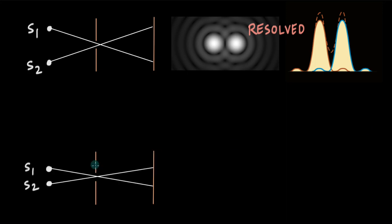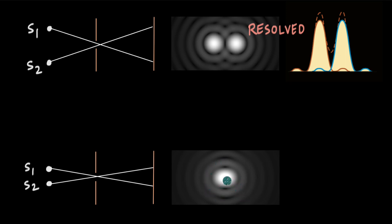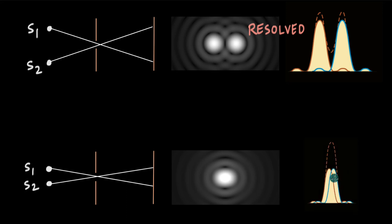But if the objects are very close to each other, the diffraction patterns will also start coming close to each other. The two central maxima overlap, and instead of two sources we will see only one source — only one peak in the intensity graph. It appears to us that there aren't two objects, there's only one. In this case we say the image is not resolved — it's unresolved — because we cannot distinguish or identify two separate objects. For us, they appear as just one object.